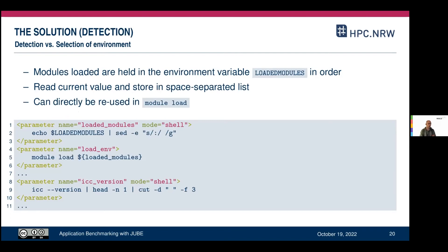Let's look at how you would detect the currently loaded modules. I would use a parameter named 'loaded_modules' with mode='shell', echo the LOADEDMODULES environment variable, and pipe it through sed to replace colons with spaces. That results in the 'loaded_modules' parameter being a space-separated list of all loaded module values. Then I can use that in another parameter 'module_load' — which will directly load all the same modules that were detected at the time — to recreate that environment.